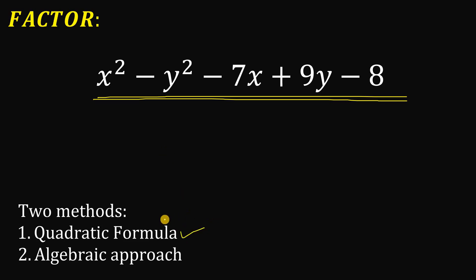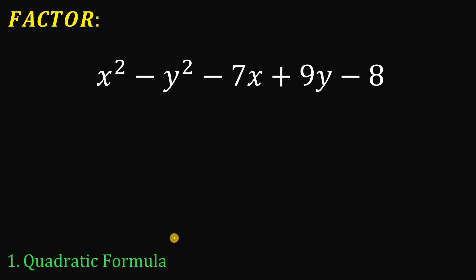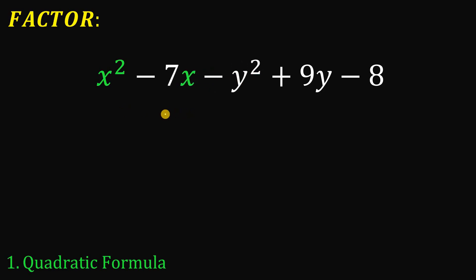Let's start the solution using the quadratic formula. Since we're using the quadratic formula, we need one variable. We assume that x is the only variable and y is a constant. Let's rearrange some terms a little bit so we have a quadratic expression in terms of x: x squared minus 7x minus y squared plus 9y minus 8.